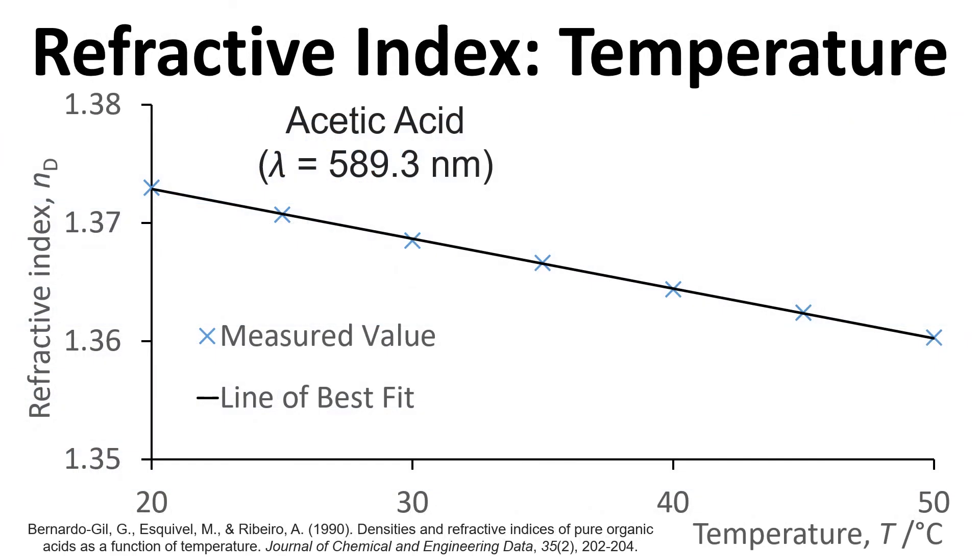Another factor is temperature of the medium. Here we have an example, acetic acid, and we can see that the refractive index on the y-axis changes as the temperature changes on the x-axis. We can actually look at the gradient of this so we can see how much the refractive index varies with respect to temperature.